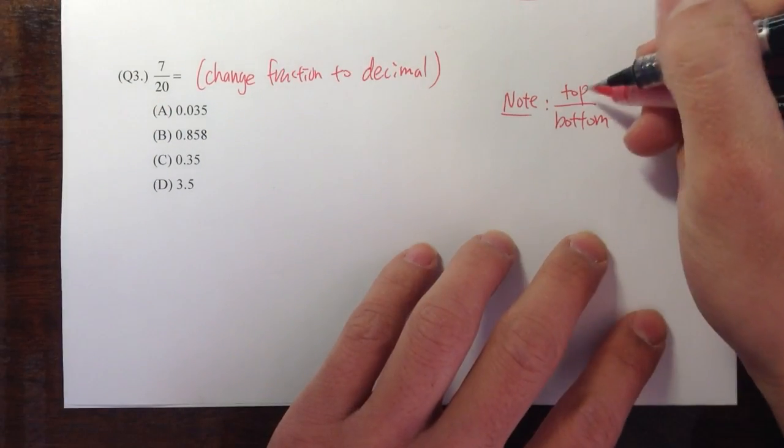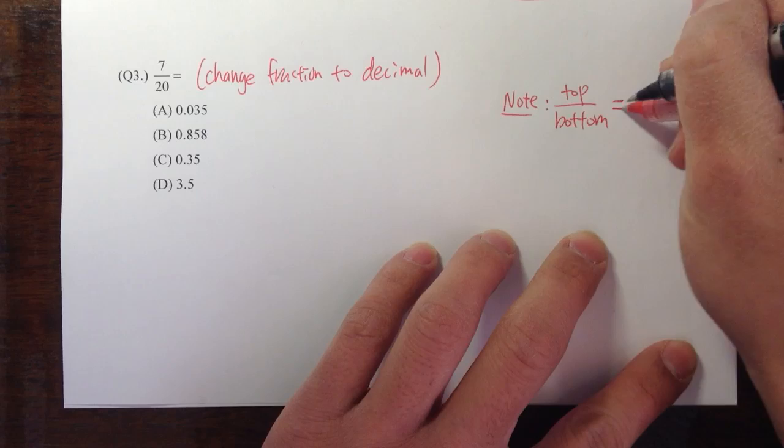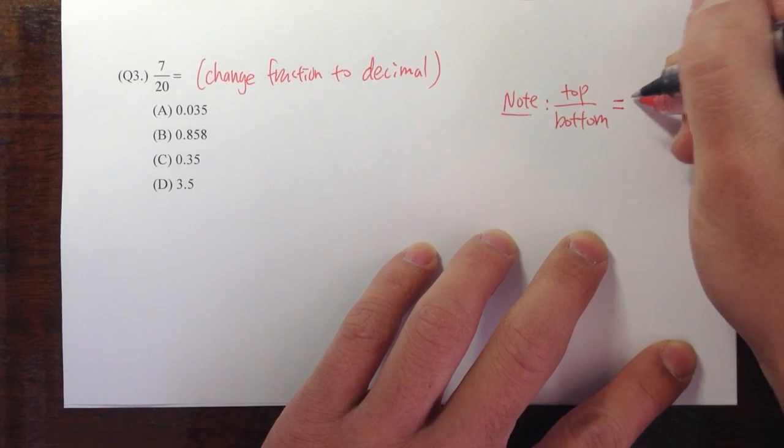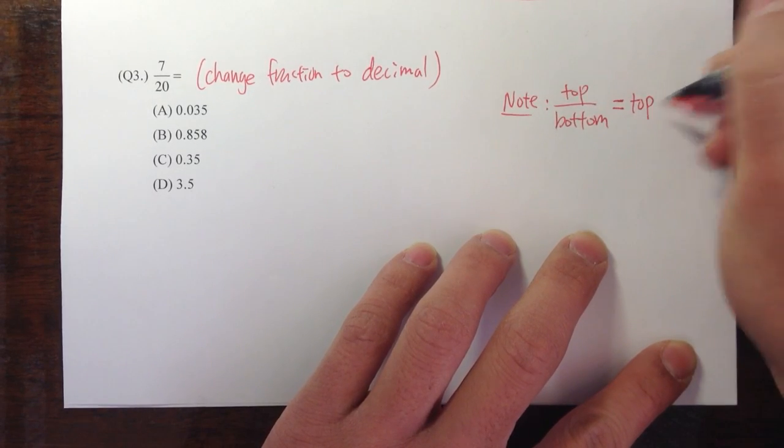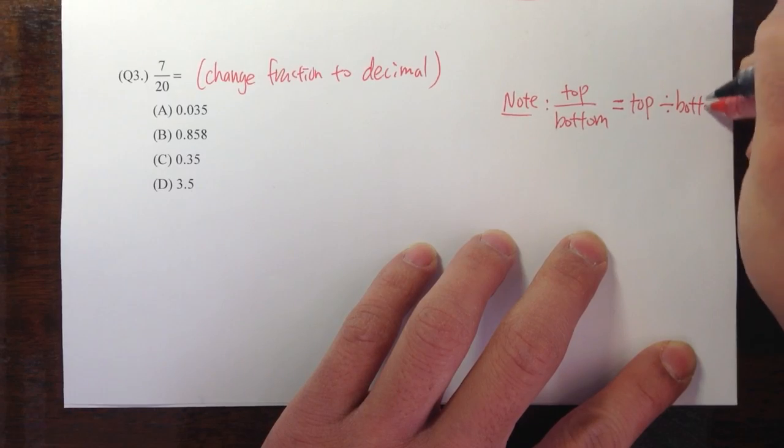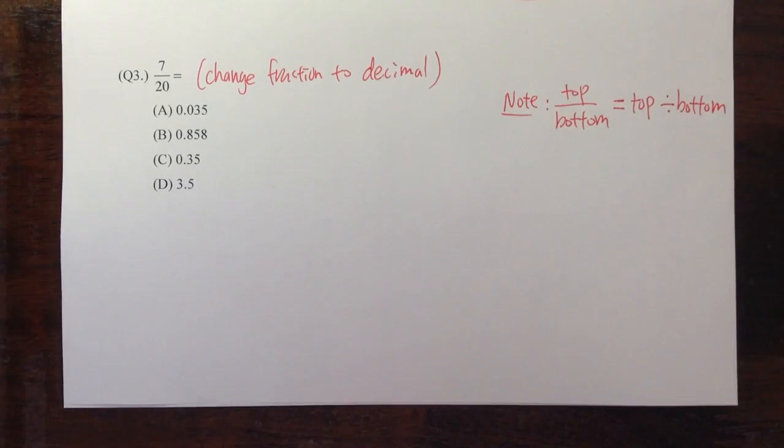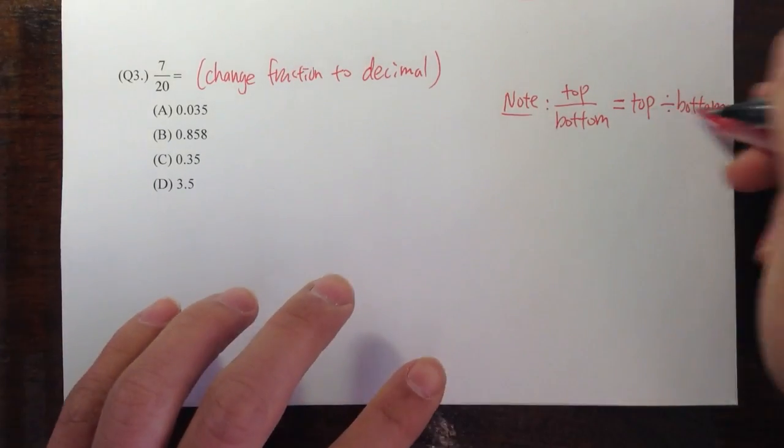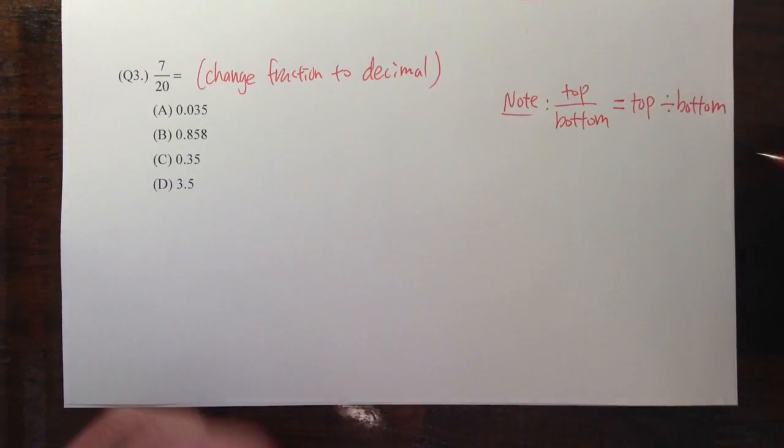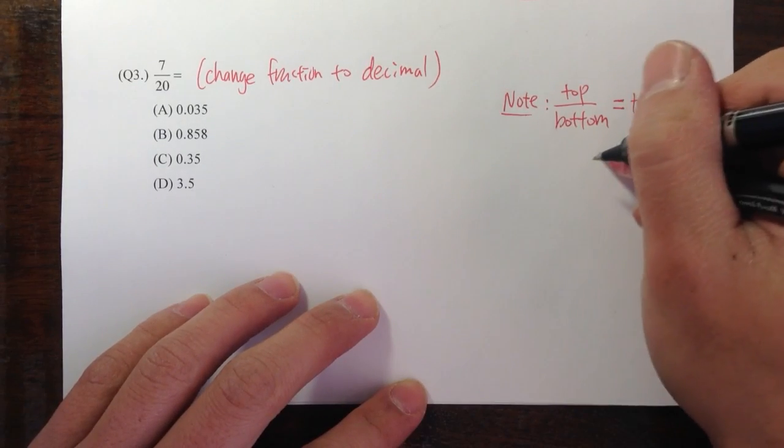When you have a fraction like this, to change this fraction to decimal, we can just divide the top number by whatever number we have on the bottom. And to divide, we're going to use long division.